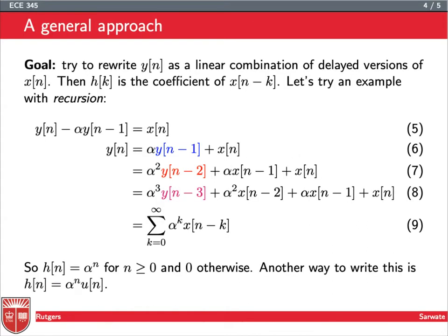So let's do an example. And then you should try some examples on your own. Our goal is to rewrite y[n] as a linear combination of delayed versions of x[n]. Then we can find the impulse response by just replacing the letter x with the letter delta everywhere. So what we're saying is basically h[k] is the coefficient of x[n-k]. Let's try a more complicated example. Let's try one which has recursion. I mean that y[n] depends on x[n], and it also depends on a past value of y[n]. So let's say y[n] minus alpha y[n-1] equals x[n]. This is called a difference equation. So what is the first step? We want to write y[n] equals something.